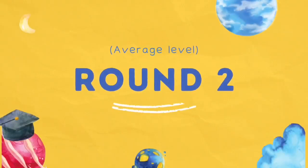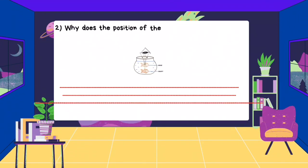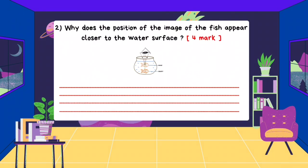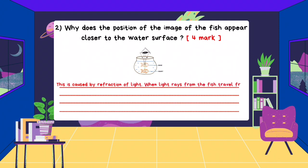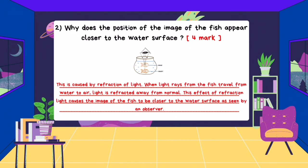Round 2. Why does the position of the image of the fish appear closer to the water surface? This is caused by refraction of light. When light rays from the fish travel from water to air, light is refracted away from normal. This effect of refraction of light causes the image of the fish to be closer to the water surface as seen by an observer.